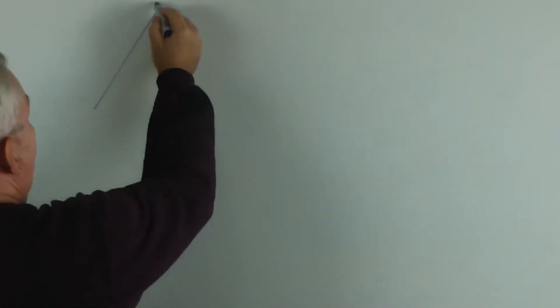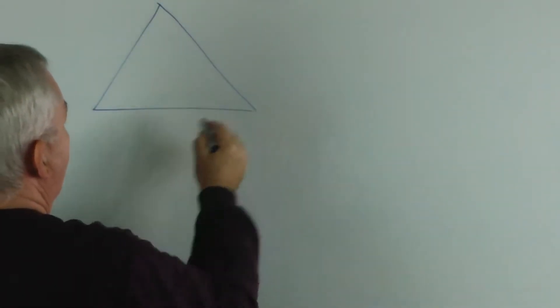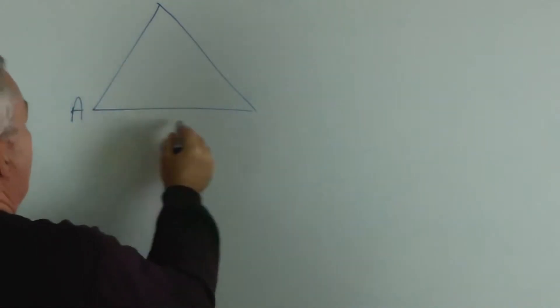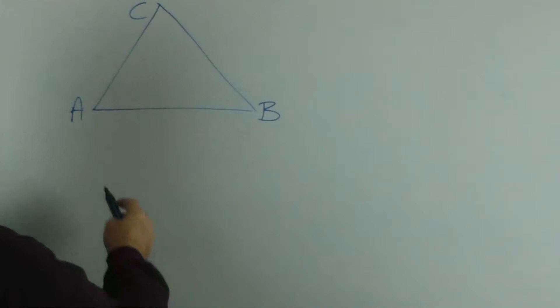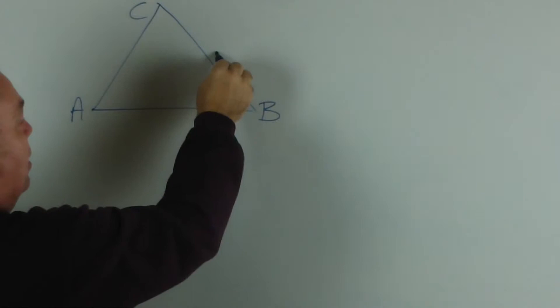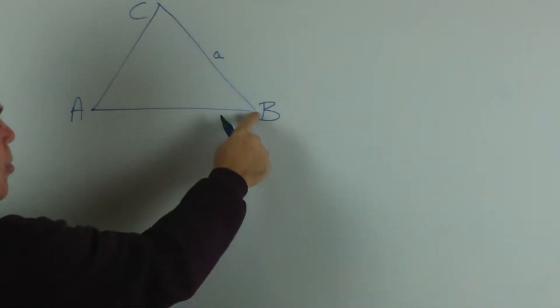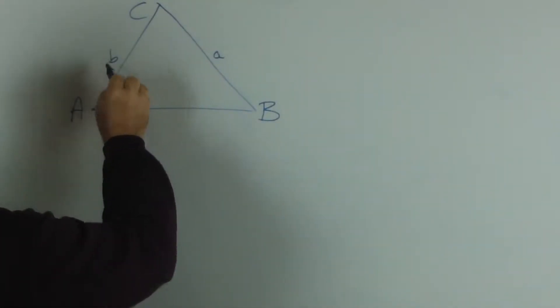We'll draw a triangle without a right angle in it. We'll label it A, B, and C. Of course, following convention, opposite vertex with a capital A we'll label the side a, opposite the B we'll label the side little b, and opposite C the side little c.